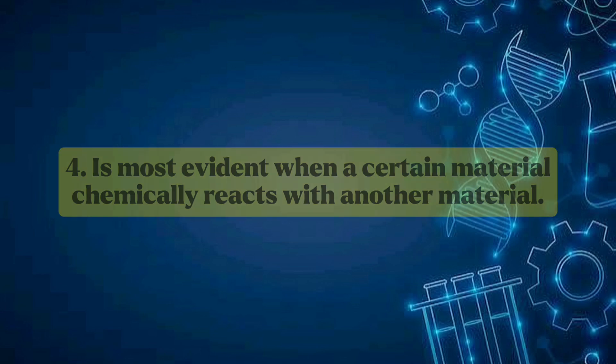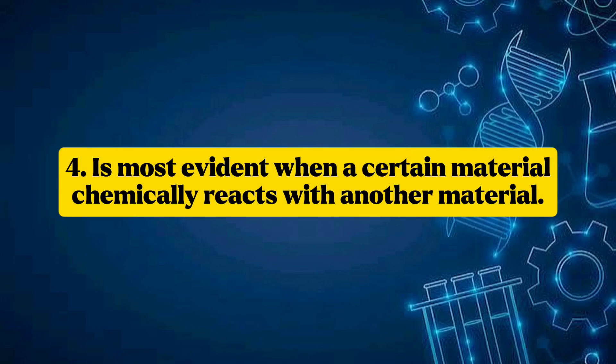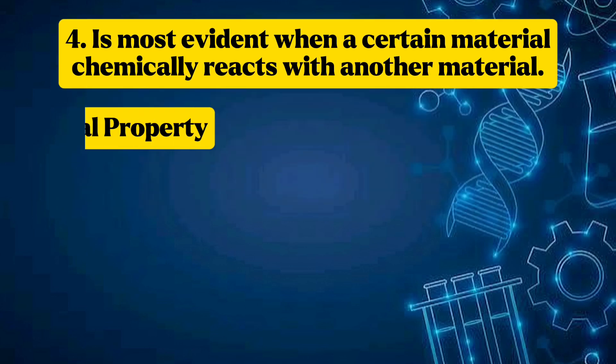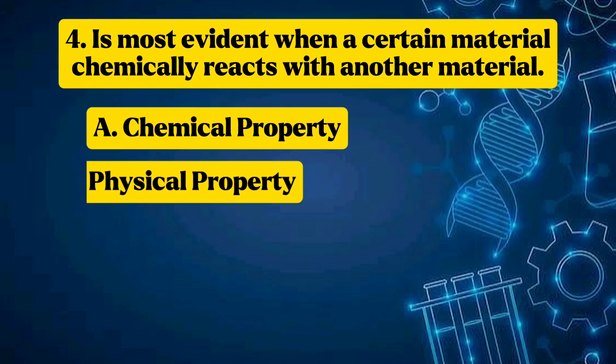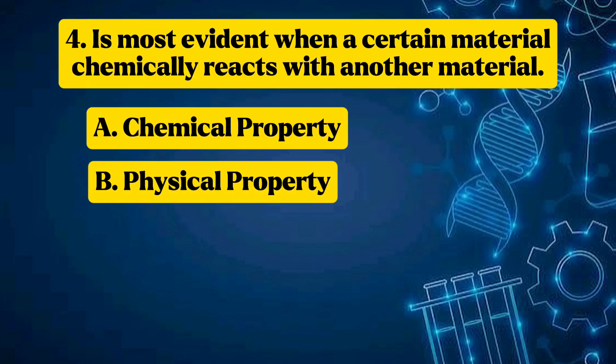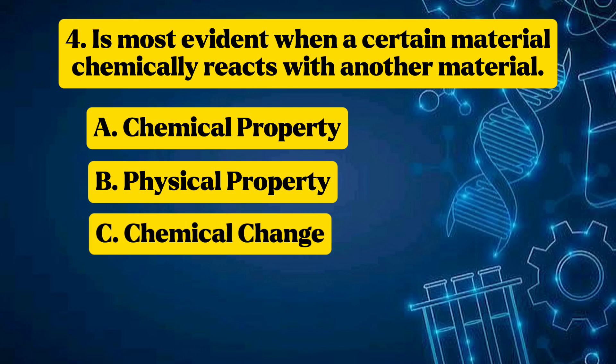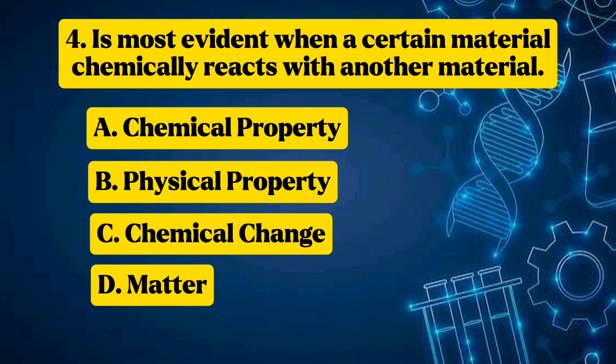Question 4: It is most evident when a certain material chemically reacts with another material. Options: A — chemical property, B — physical property, C — chemical change, D — matter. Answer: A — Chemical property.